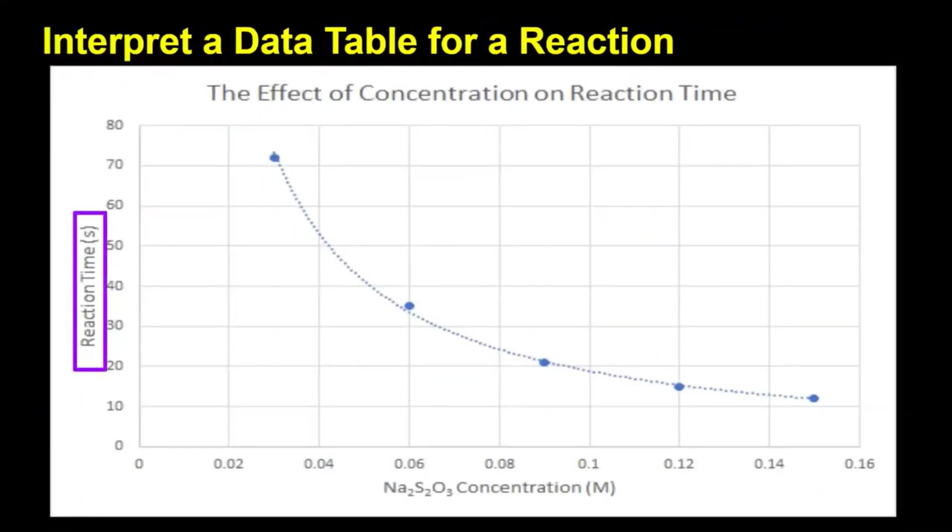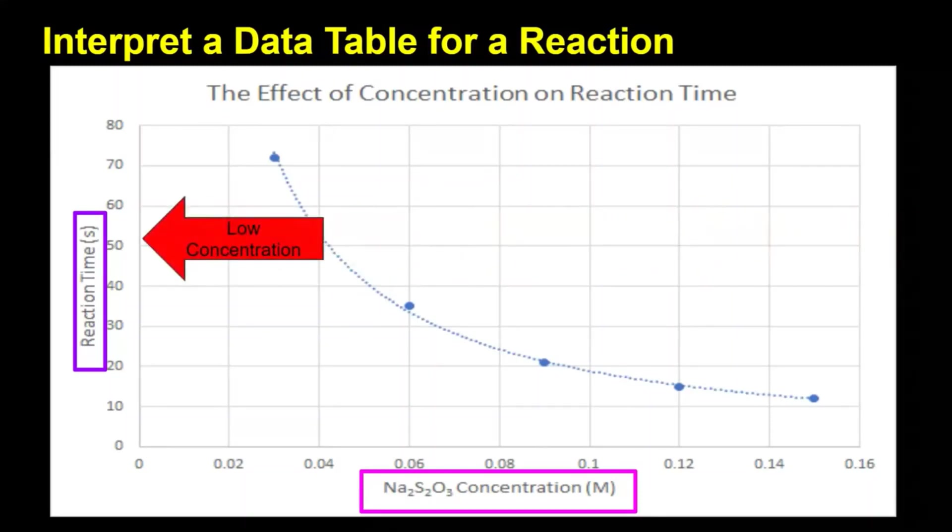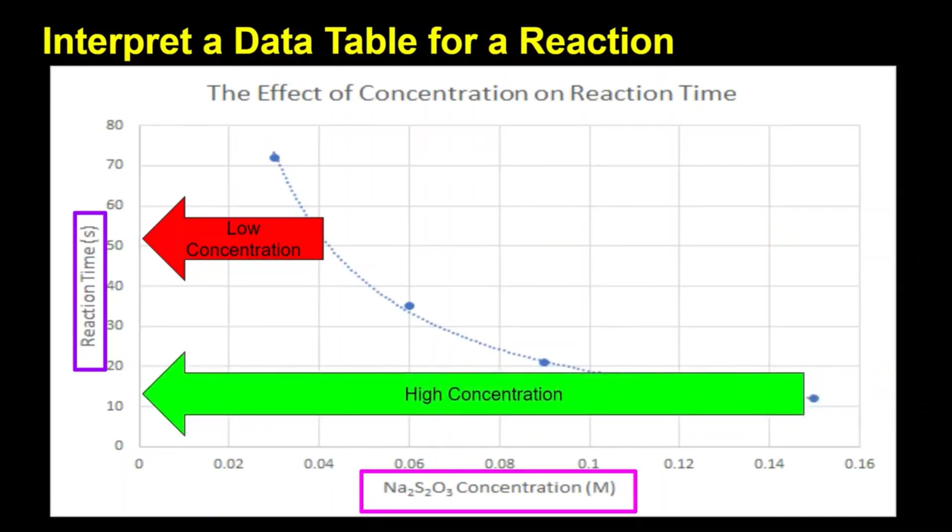Here, a graph comparing reaction rate, dependent variable, versus concentration, the independent variable, shows a decreasing curve. Trials with lower concentration of Na2S2O3 have a longer reaction time, meaning the reaction was slower. Trials with higher reactant concentration proceeded much more quickly and had a shorter reaction time as a result. This curve of the graph suggests that there would be an upper limit to the rate for this reaction, since we can see the curve flattening out in a manner which would not allow it to ever reach a reaction time of zero seconds.